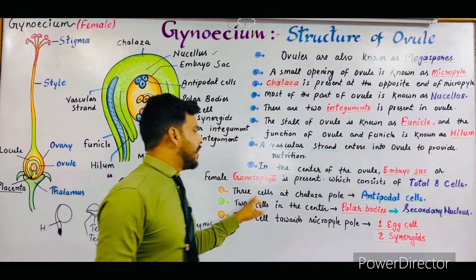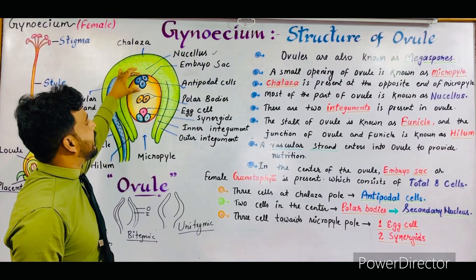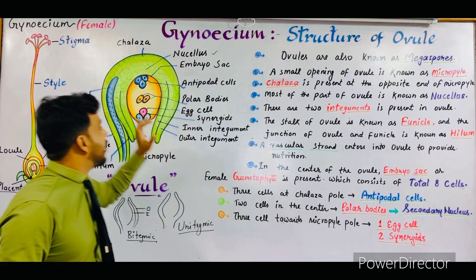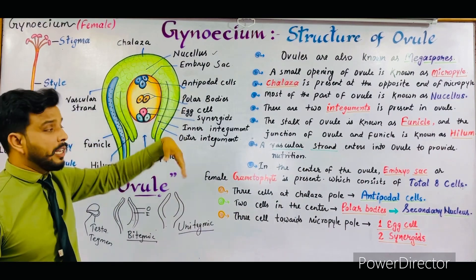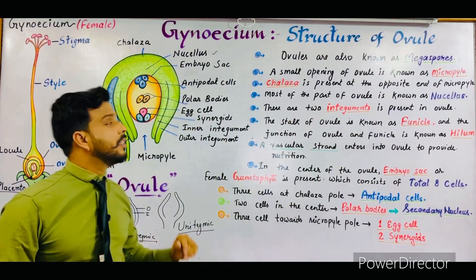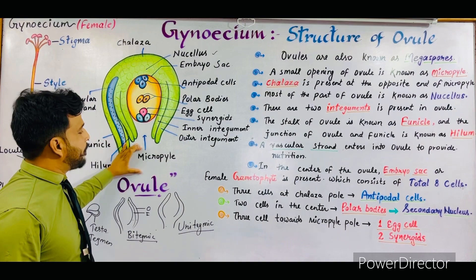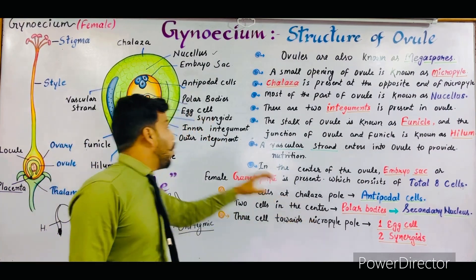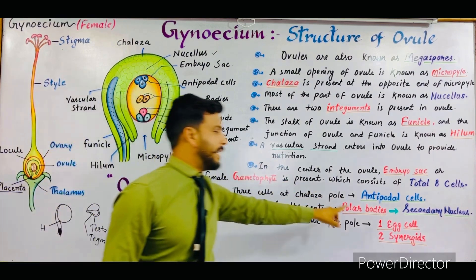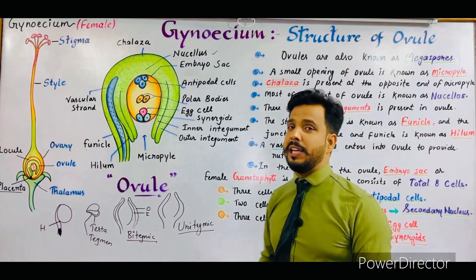The eight cells of the embryo sac: three cells at the chalaza pole are antipodal cells; two cells in the center are polar bodies, which will fuse to form a diploid secondary nucleus; and three cells at the micropyle pole — one egg cell and two synergids. That covers the structure of ovule.